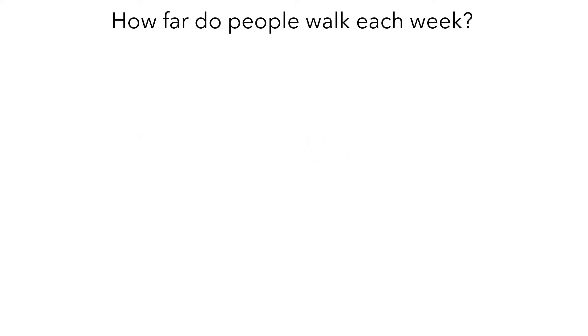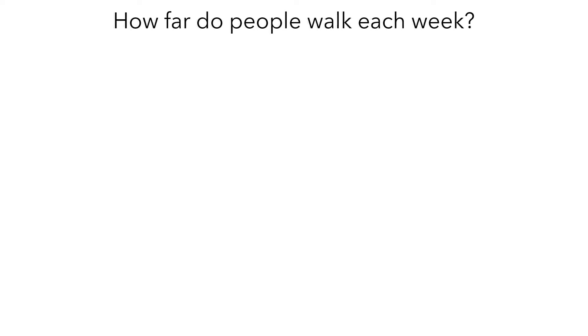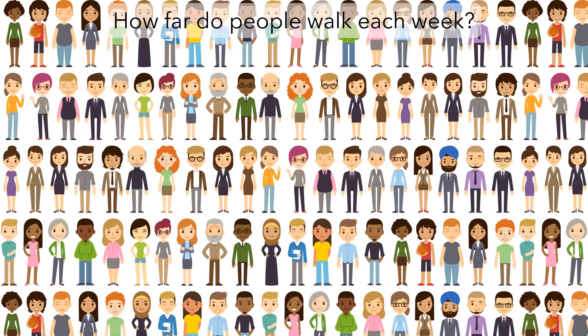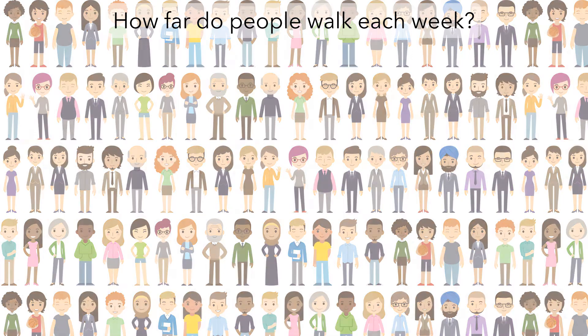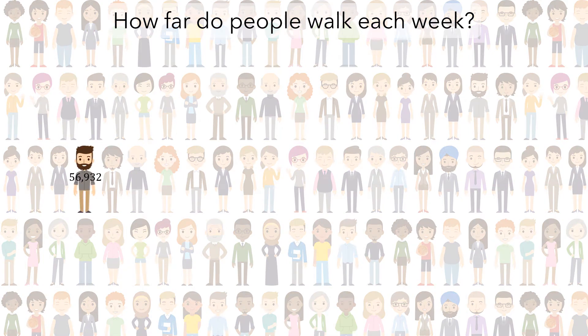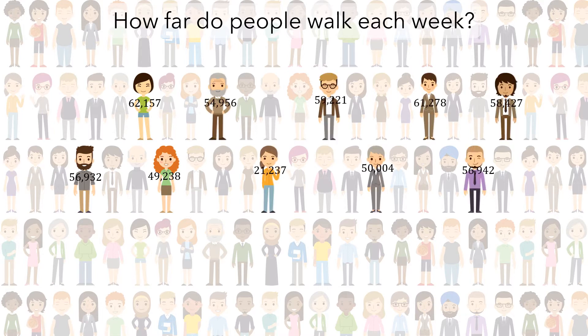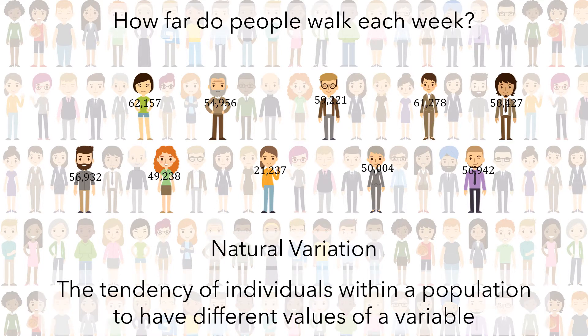The research question we'll be thinking about is how far people walk each week. If we think about the entire population, it should be the case that everybody doesn't walk the same number of steps each week. Maybe this person takes 56,932 steps in a week, and this person takes 62,157, and this person only takes 49,238 steps, and so on. What we're seeing here is a type of variation called natural variation — the tendency of individuals within a population to have different values of a variable.